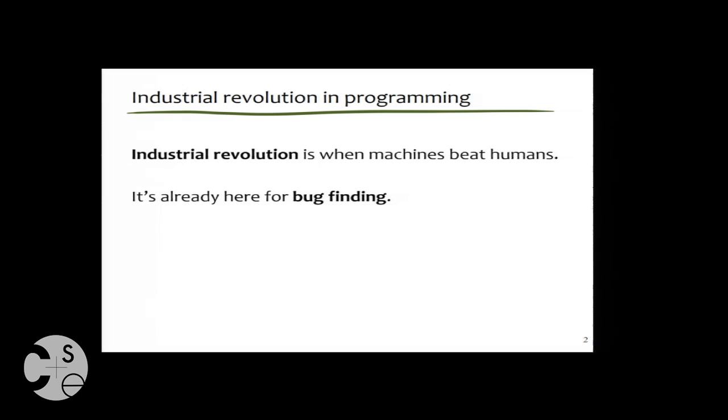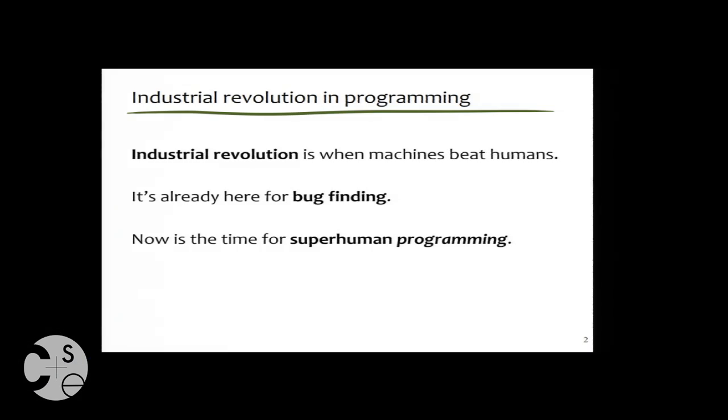And this has in programming happened maybe 50 years ago when people started writing compilers and compilers beat humans. It has recently maybe 10-15 years ago happened in bug finding through test case generation, model checking, and so on. Tools can find bugs that humans cannot. And so maybe now this is the time to look at the front end of the programming ecosystem where you actually are designing and programming so that those bugs don't happen in the first place.